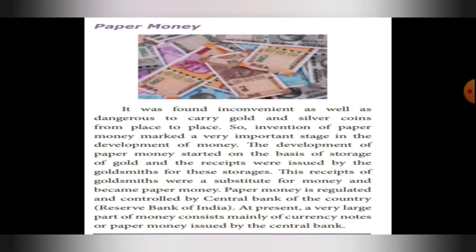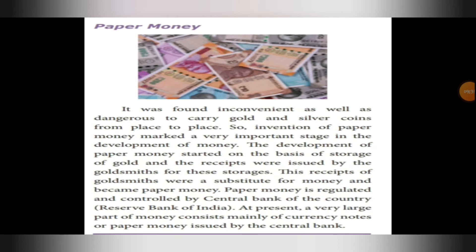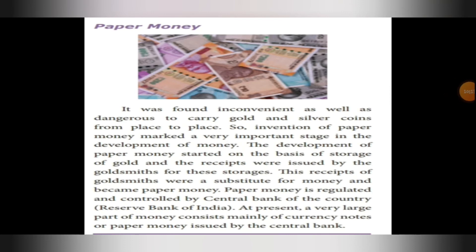Next one is paper money. It was found inconvenient as well as dangerous to carry gold and silver coins from place to place. For that purpose, the invention of paper money marked a very important stage in the development of money. The government introduced paper currency. The development of paper money started on the basis of storage of gold, and receipts were issued by goldsmiths for these storages. These receipts of goldsmiths were substitutes for money and became paper money.